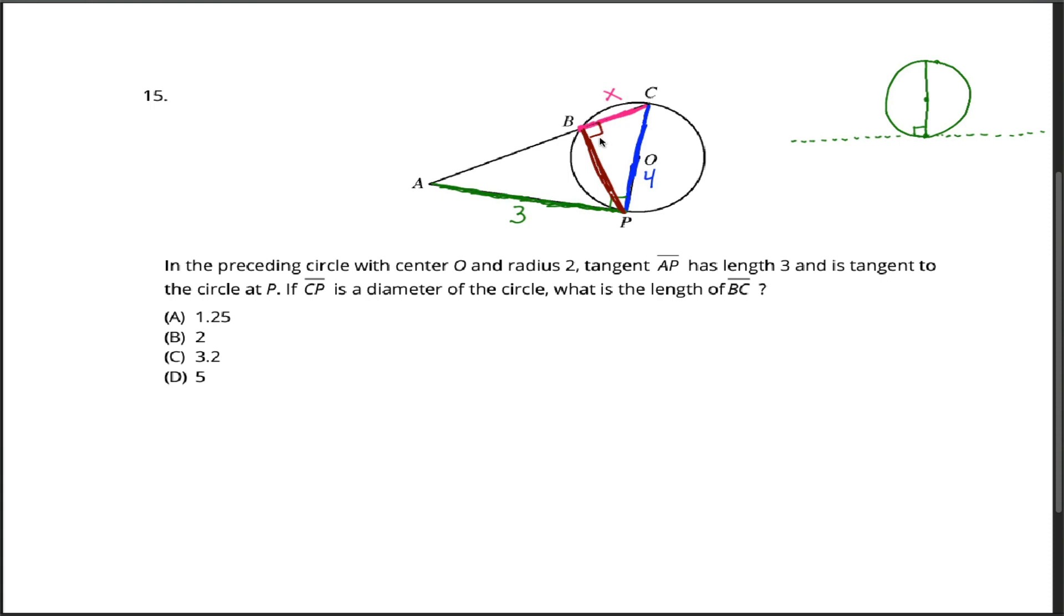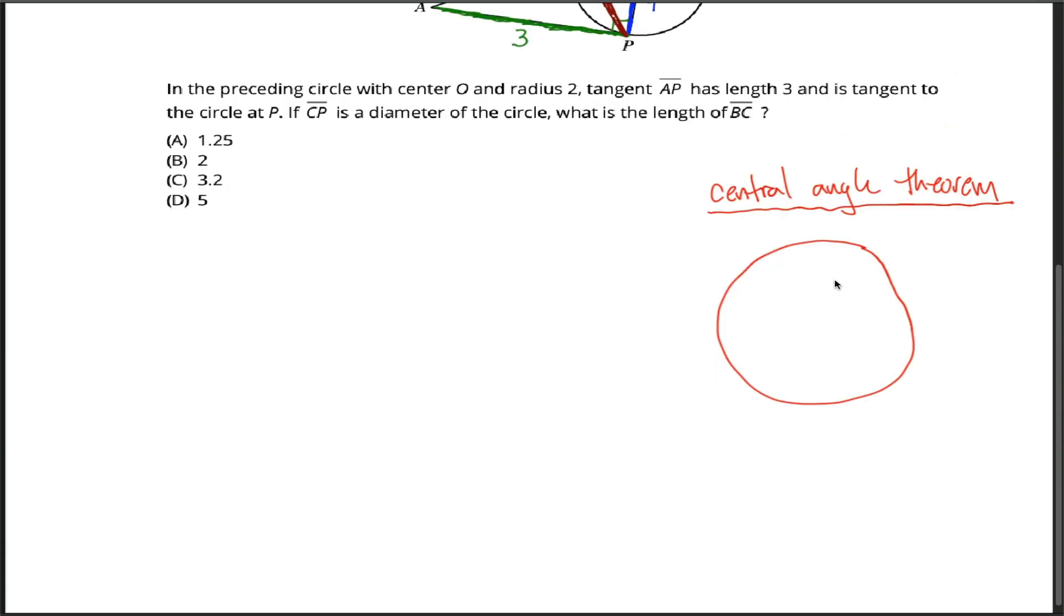The reason why is a special case of what's called the central angle theorem, which is handy enough that it's worth reviewing. So the idea with the central angle theorem is you start out with the circle, and you pick any two points on that circle. It doesn't matter where they are. Maybe I'll put them here and here. Sure, we'll call those A and B.